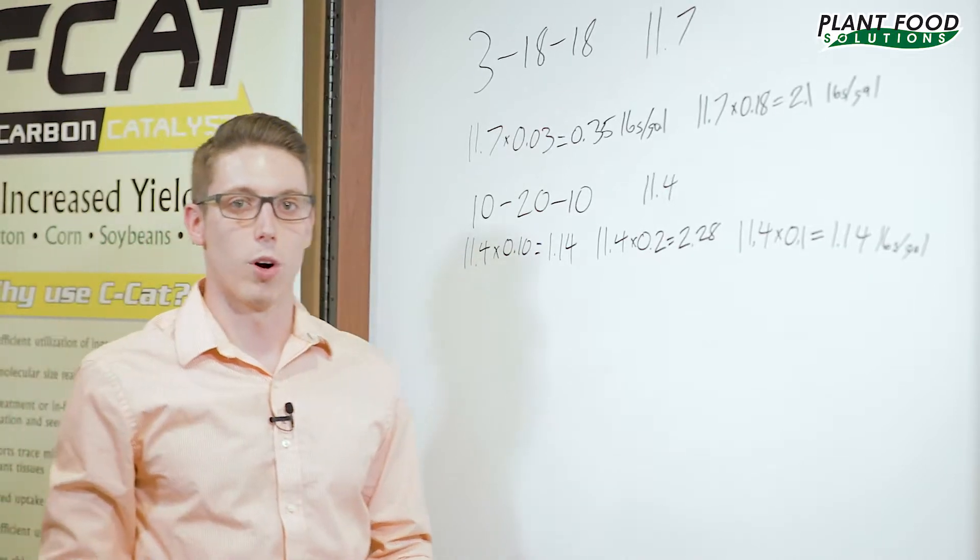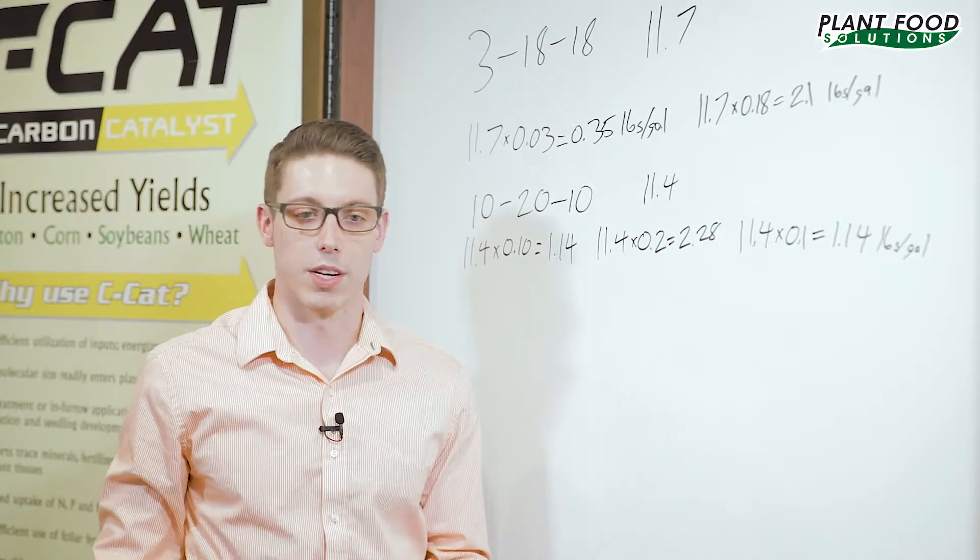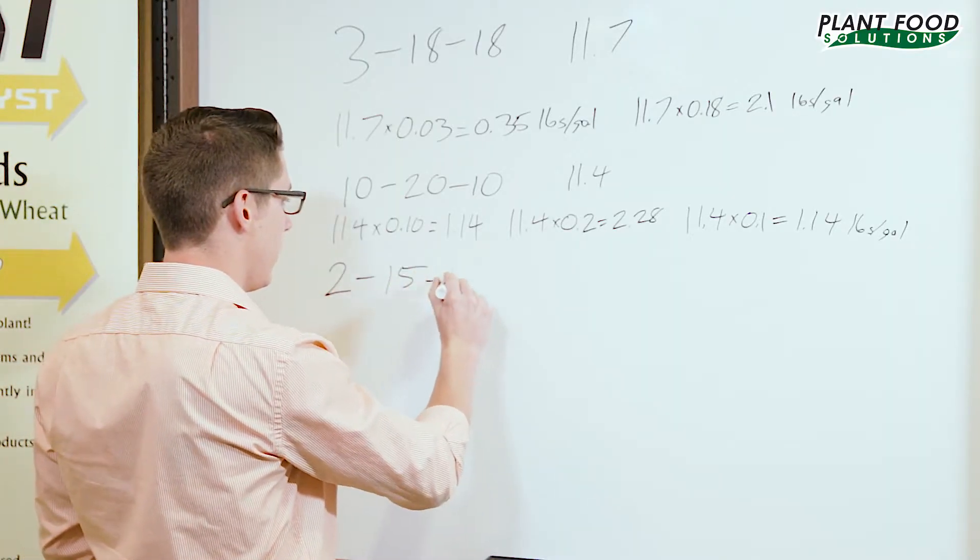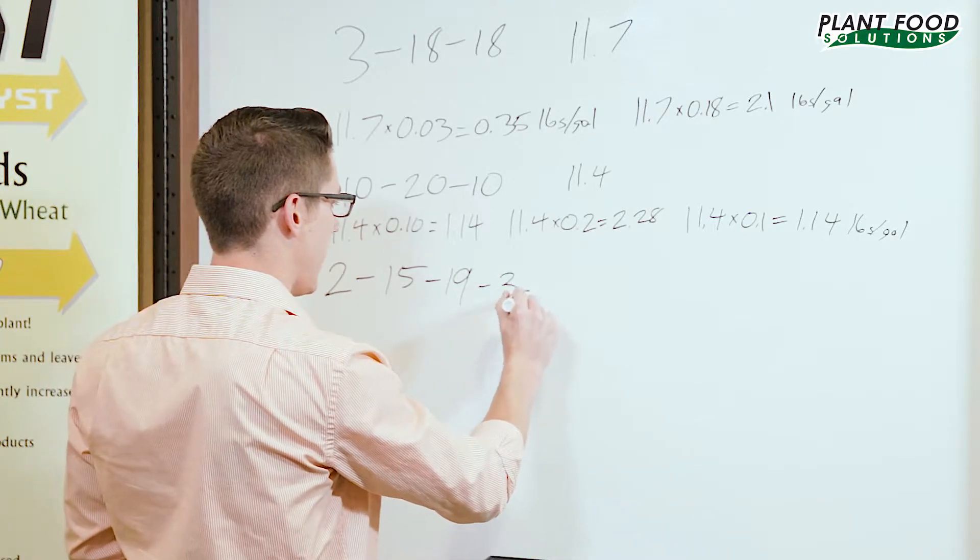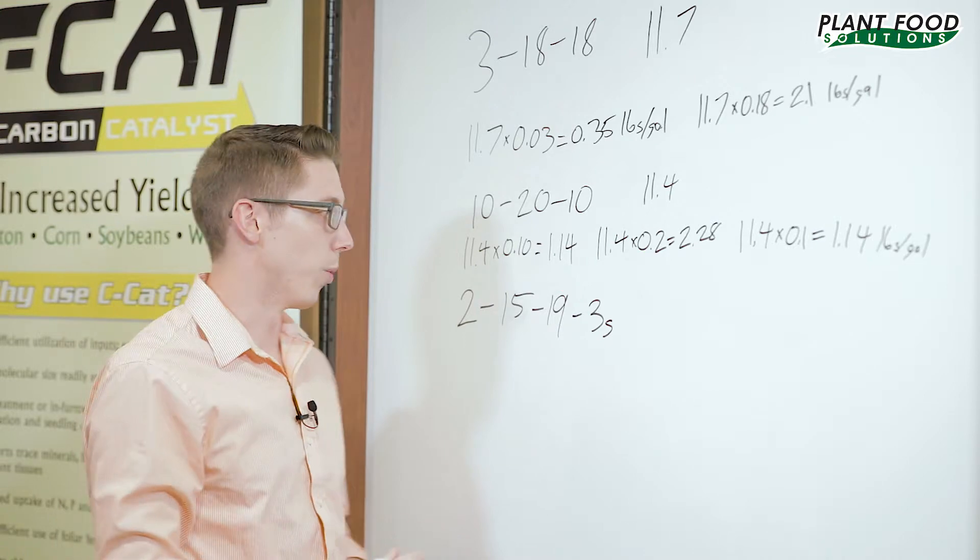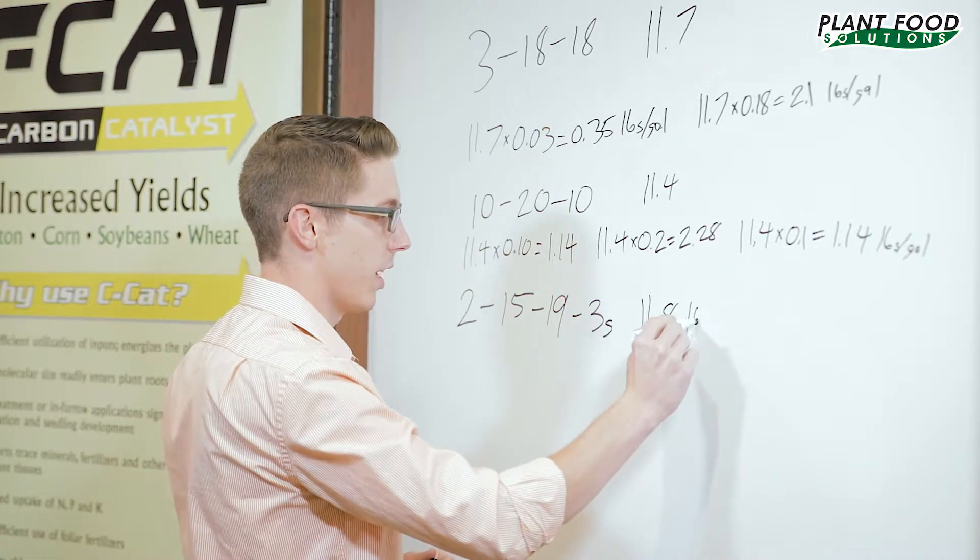We're going to take a look at one more analysis that has a little micronutrients in it. So you can see how you do that as well. We're looking at a 2-15-19-3S. We're going to do the first three numbers just as we've done before. So the weight on that is 11.8 pounds a gallon.